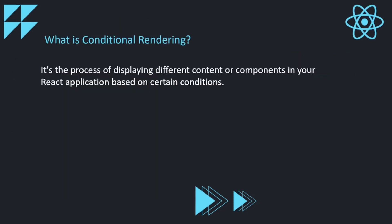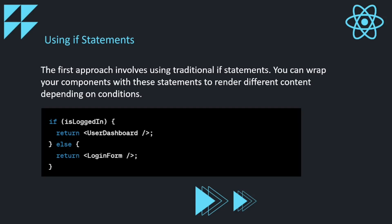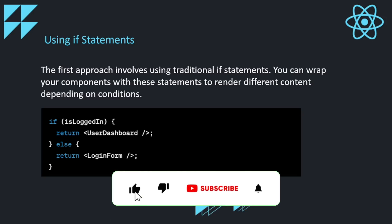Let's understand what is conditional rendering. It is the process of displaying different content or components in your React application based on certain conditions. Now let us look at the different approaches by which we can do conditional rendering. The first approach involves using traditional if statements. You can wrap your components with these statements to render different content depending on conditions.